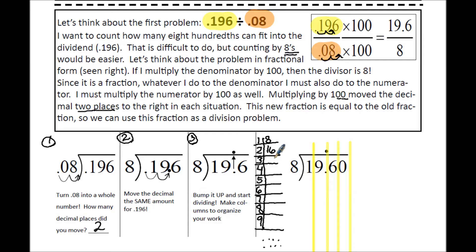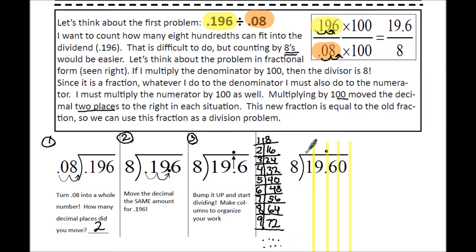We're going to do 1 times 8 all the way up to 9 times 8, counting up in groups of 8. Now we go column by column. 8 can fit into 1 zero times because 8 is too big. 0 times 8 is 0, and 1 minus 0 is 1. Now we're done with the first column. We move to the second column, but we need to combine those two columns, so we bring the 9 down to read across as 19.